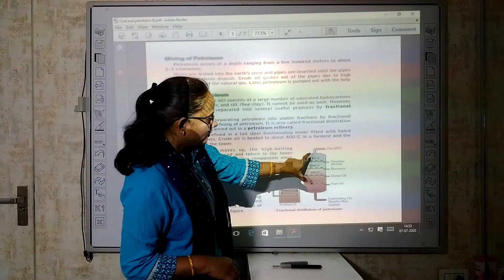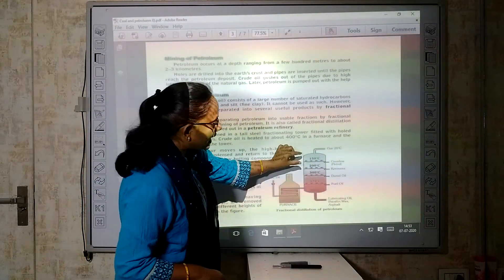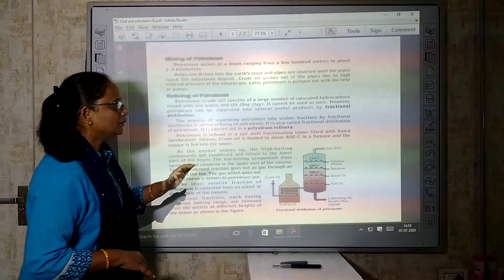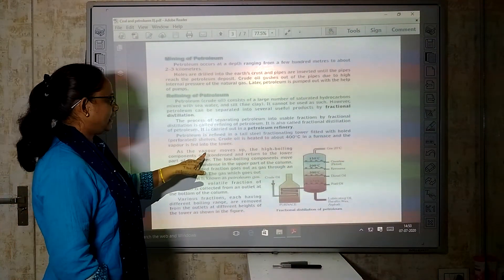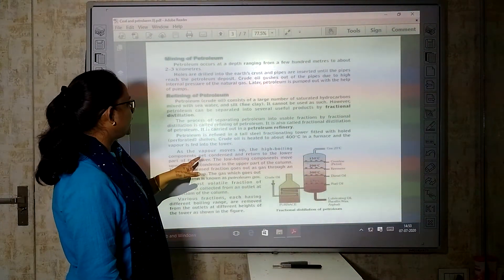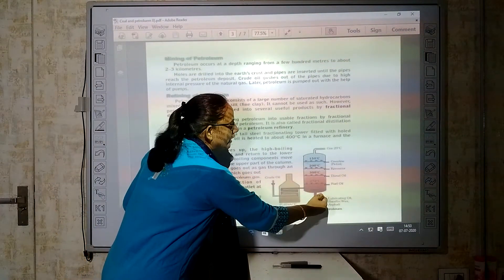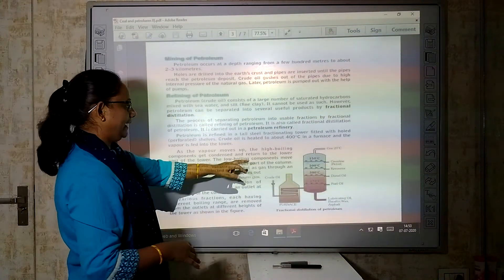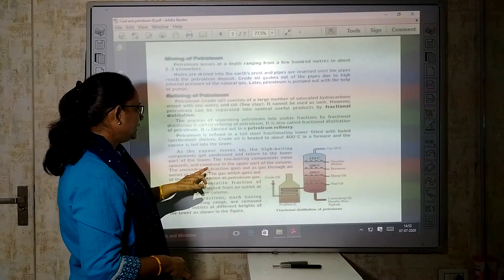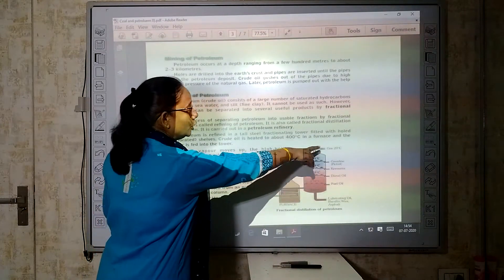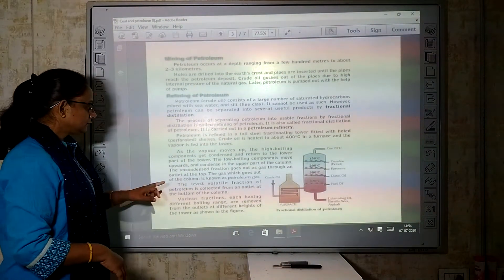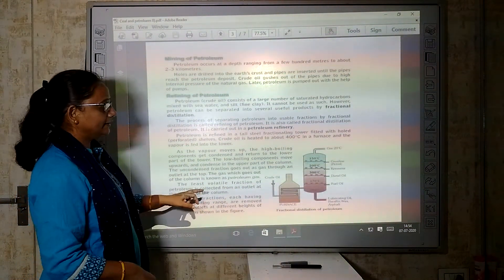This is the furnace. See, different fractions you can see. Fractions means pieces. We differentiate into pieces. As the vapor moves up, the high boiling components condense and return to the lower part. They condense and come back down. The lower boiling components move upward and condense in the upper part of the column. The uncondensed fraction goes out as a gas through an outlet at the top. The gas which goes out of the column is known as petroleum gas. The least volatile fraction of petroleum is collected from the outlet at the bottom.